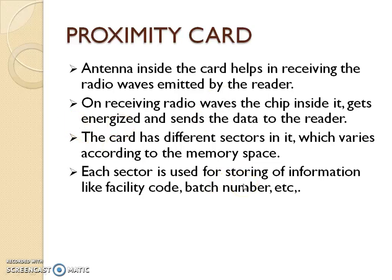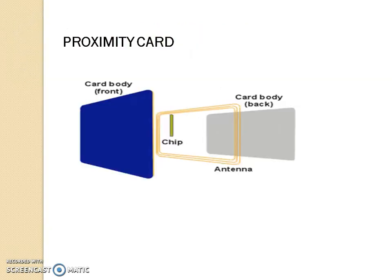The card has different sectors in it where information is stored. Each sector is used for storing information like the code, batch number, or whatever data that is fed which is relevant to be read by the device. If you open this card, you can see an antenna going in a circular way and a chip.